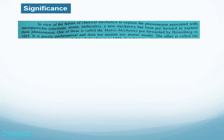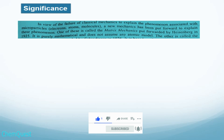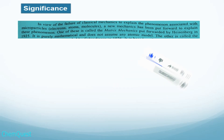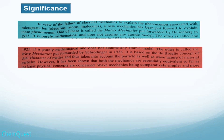Now we will discuss the significance of quantum mechanics. In view of the failure of classical mechanics to explain phenomena associated with microscopic particles, a new mechanics was put forward. One of these is called matrix mechanics, and it was put forward by Heisenberg in 1925. It is purely mathematical and does not assume any atomic model.